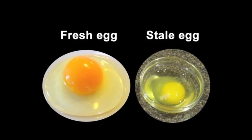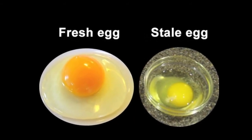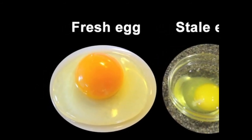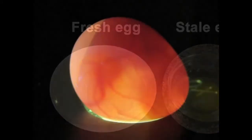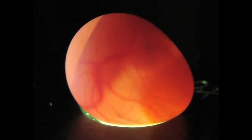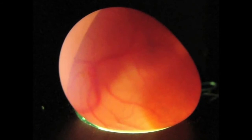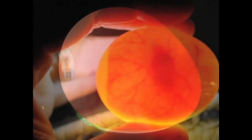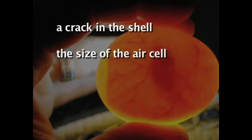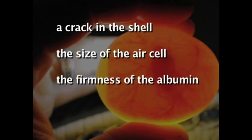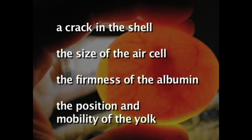Fresh eggs, when broken onto a plate, stand up in rounded form because of the viscous nature of the thick white which surrounds the yolk. The quality of an unbroken egg can be determined by candling, where the egg is held against a source of strong light. Candling will reveal a crack in the shell, the size of the air cell, the firmness of the albumen or thick white, and the position and mobility of the yolk. As egg deteriorates, the chalazae can no longer hold the yolk in the center and the yolk tends to move towards the shell, which can be observed during candling.